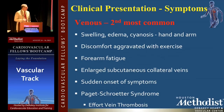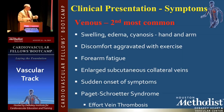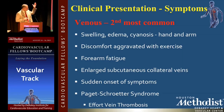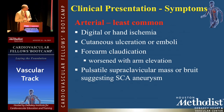Venous — how do they present? Swelling, edema, cyanosis of the hand and arm, discomfort aggravated with exercise, forearm fatigue, enlarged collateral veins. Sudden onset of symptoms — they were okay in the morning, and by the time evening came, their hand was swollen. Paget-Schroeder effort vein thrombosis.